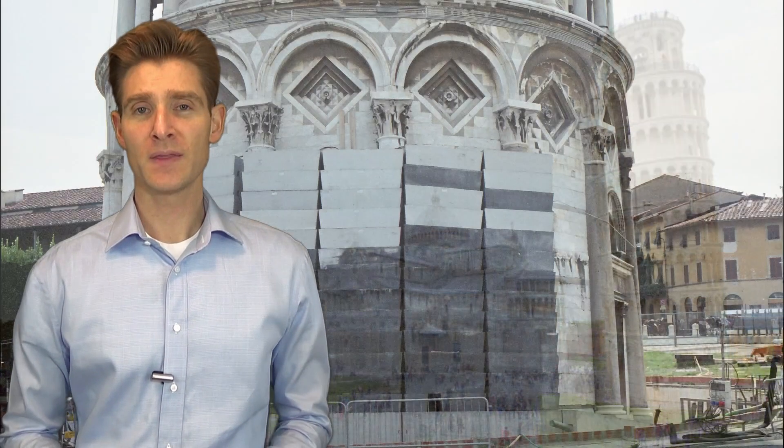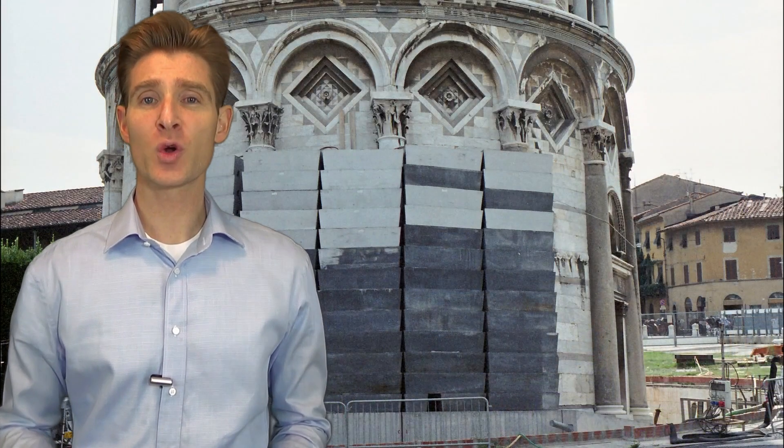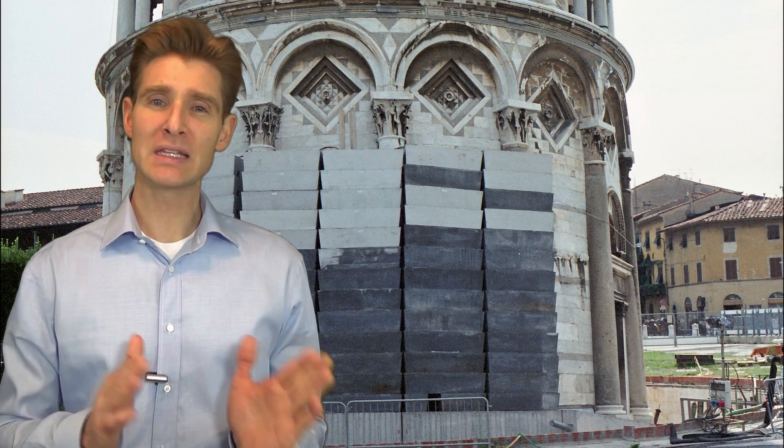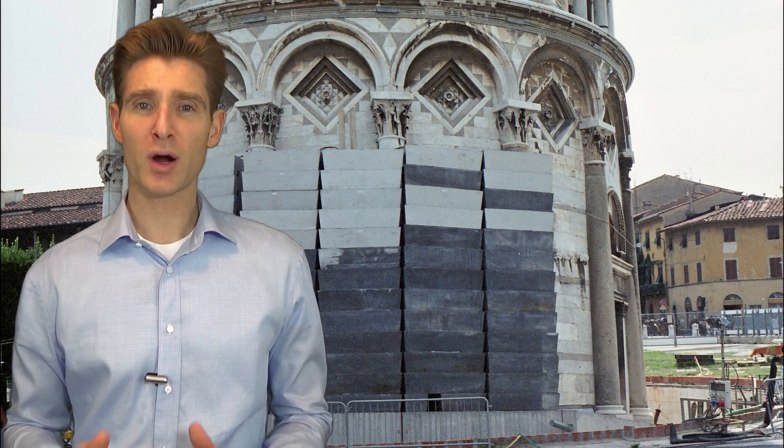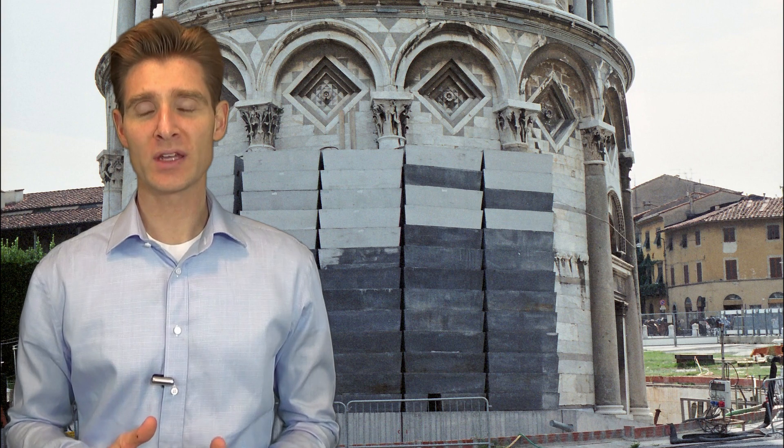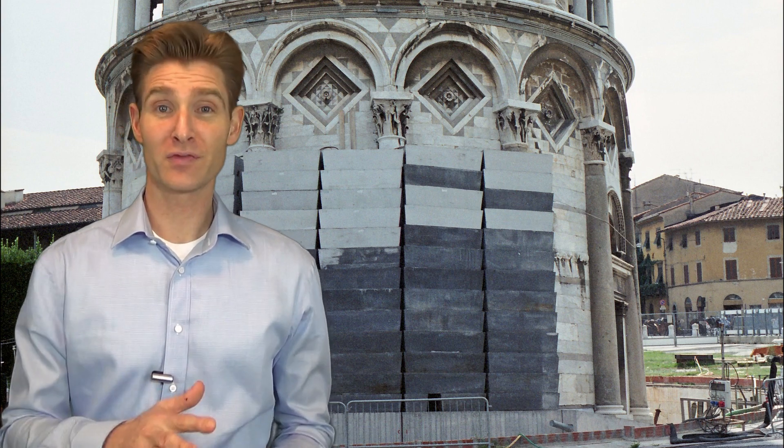And then they did something very important. They put a bunch of counterweights on the north end of the tower to keep it from leaning. Those counterweights were part of the reason the tower still stands today because the counterweight was able to keep it from falling over.